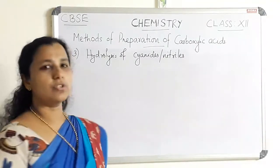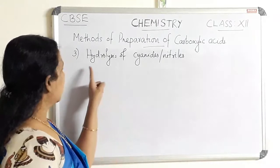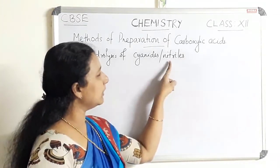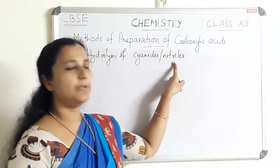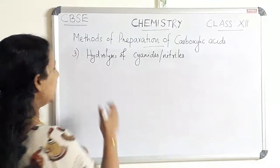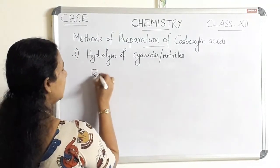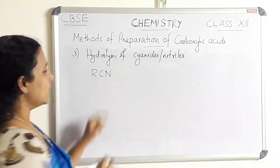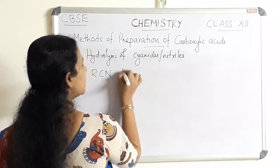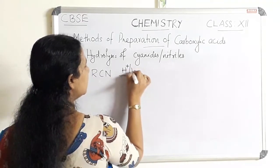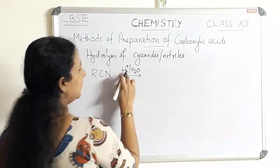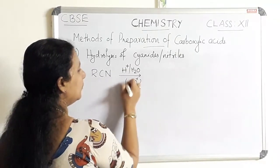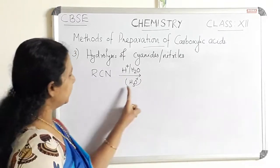The third method of preparation of carboxylic acid is hydrolysis of cyanides or nitriles. Nitrile is the IUPAC name for cyanides. We can write the general formula RCN, that is the general formula of cyanide, which on hydrolysis — acid hydrolysis, we can write H⁺/H₂O or H₃O⁺. Any of these representations are the same.